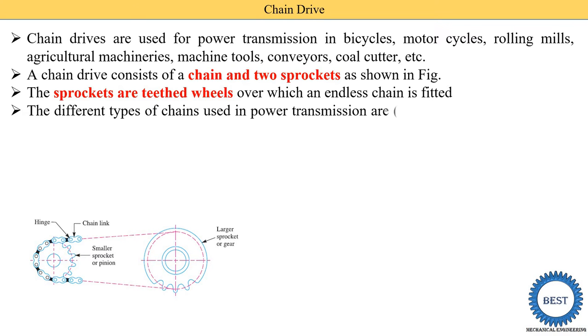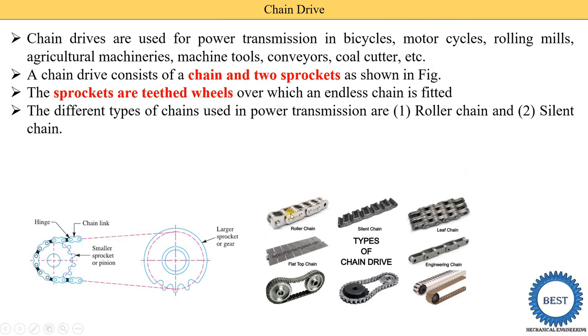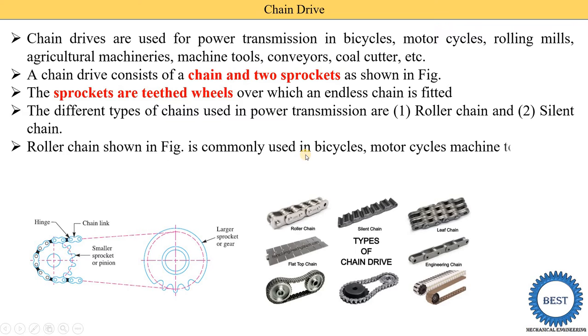Different types of chains are used in power transmission systems. One is called roller chain and second one is the silent chain. Here we see that a number of types of chain drives are used. This one is the roller chain that is generally used in bicycles. Other type is the silent chain. Roller chain shown in figure is commonly used in bicycles, motorcycles and mechanical machine tools.